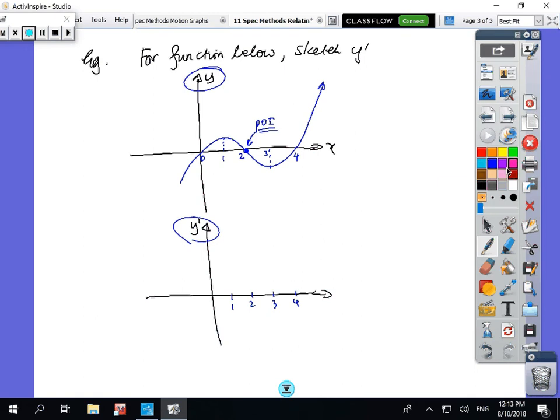One is a stationary point, so that means it must be zero. Three is a stationary point, so it must be zero. The gradient is positive here, which means that it must be positive numbers.